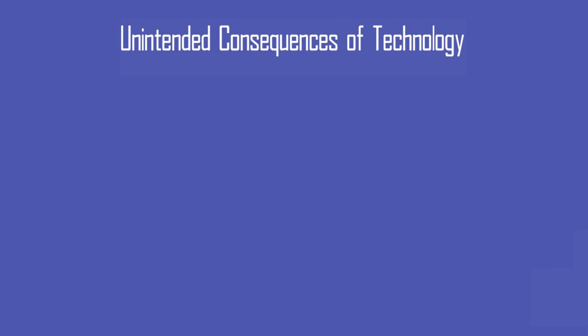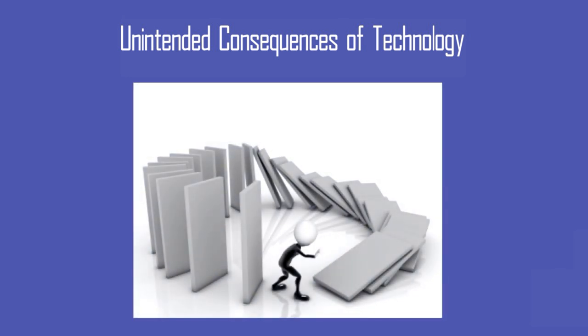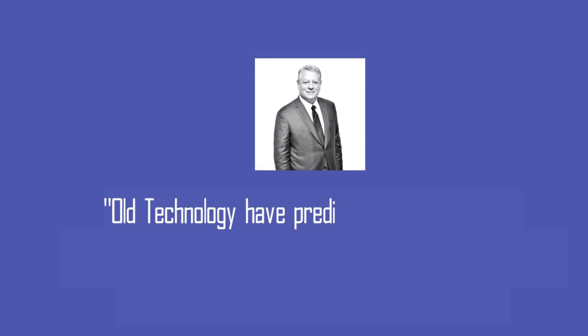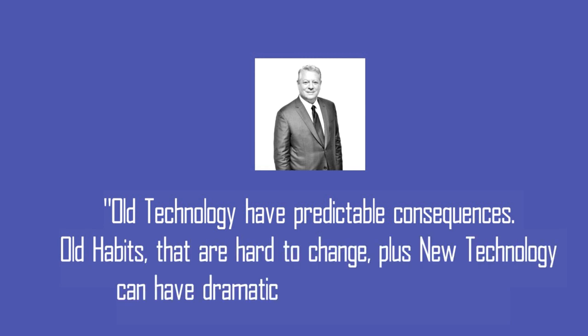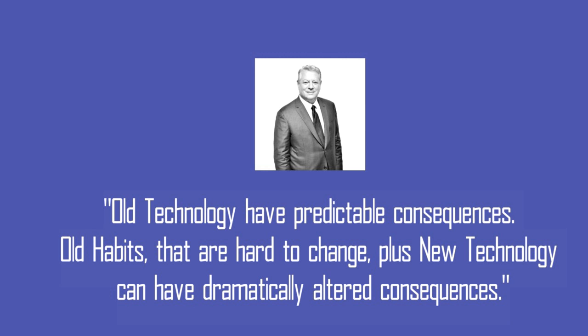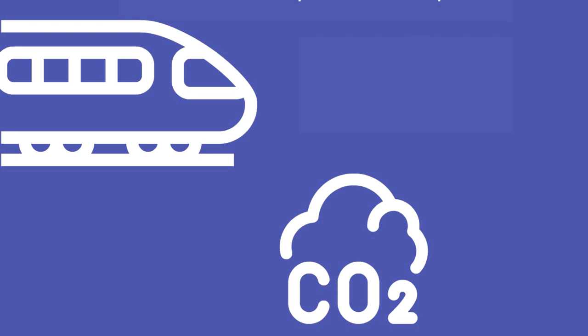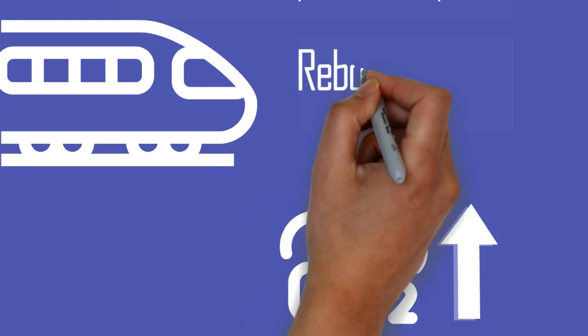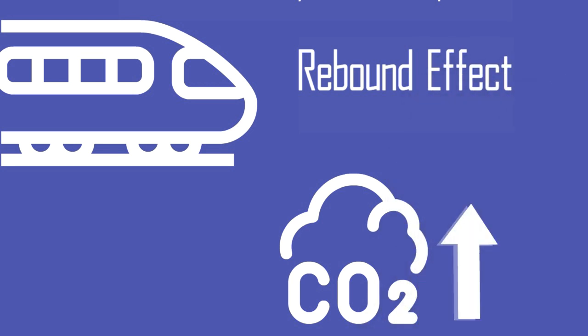While the Kondratiev wave model is interesting from a historic perspective, it should not be treated as a hard limit for determining the lifetime of technology. We now cover the next segment: the law of unintended consequences. Technology has a strained relationship with social behavior — at times, technological developments lead to unintended consequences. As Al Gore famously quoted: old habits plus old technology have predictable consequences, while old habits plus new technology can have dramatically altered consequences. For example, high-speed train tracks laid across the country with the thought of lowering CO2 emissions by disincentivizing road and airplane journeys instead did otherwise — emissions per person went up because people began commuting longer distances for work.